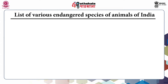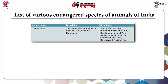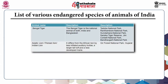Let us discuss various endangered animal species of India. The Bengal tiger is the national animal of both India and Bangladesh. It is found in Dobha National Park, Ranthambore National Park, Sundarbans National Park, Sariska Tiger Reserve, Jim Corbett National Park, Bandhavgarh National Park, and several other places.